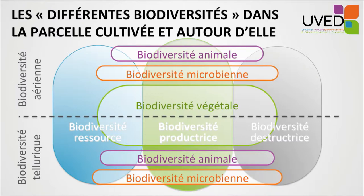If we analyze the production process and take into consideration the services provided by biodiversity to agricultural production, there is the part agriculture concentrates on: the productive biodiversity, the resource biodiversity, but also the destructive biodiversity — pest attackers. This is a negative kind of biodiversity because it decreases yield.